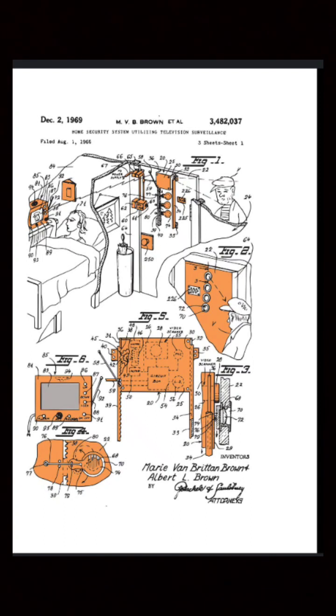Marie Van Brittan Brown was the inventor of the first home security system. She is also credited with the invention of the first closed-circuit television.